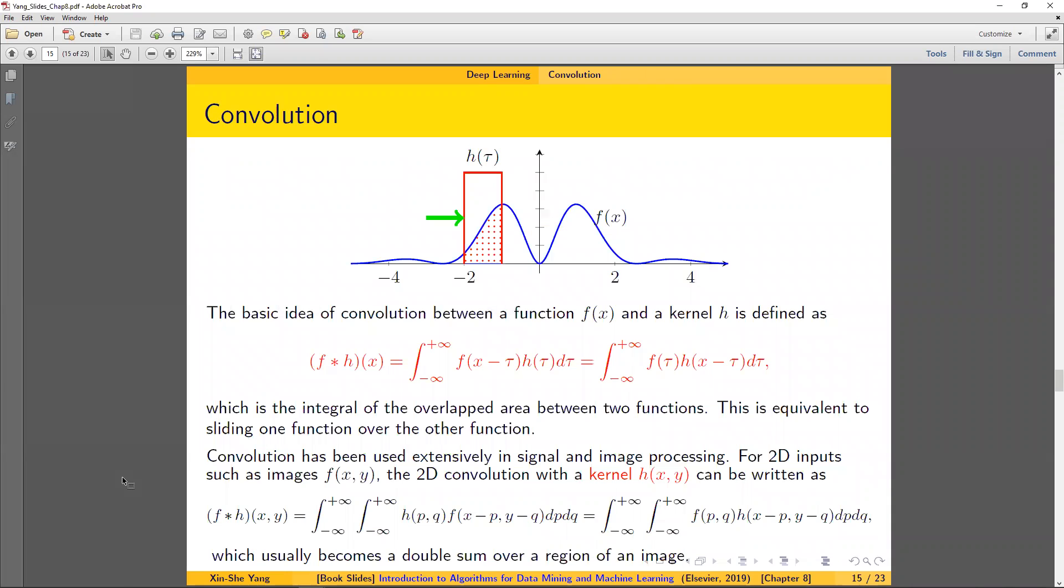In the convolutional step, it's nothing but trying to get an integral of the overlapping area between two functions. And it's equivalent to sliding one function over the other function. So we have a function f, and then we have a kernel h. And then we are trying to get an integral of the overlapped area between those two functions. Similarly, you can also see that for 2D inputs such as image f, the 2D convolution with kernel h can be written as this function, which becomes a double sum over a region of our image.